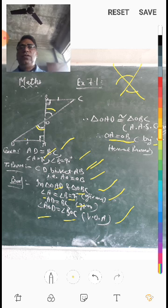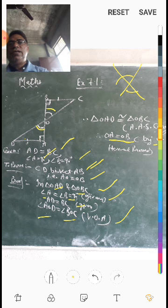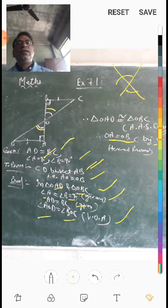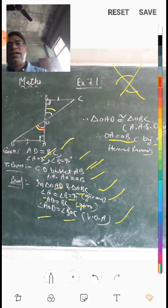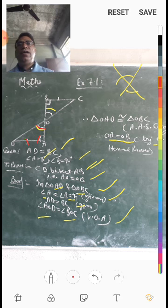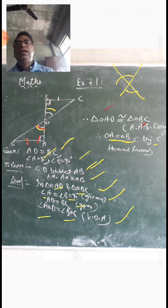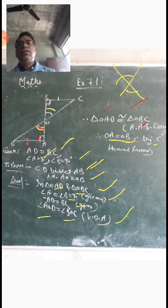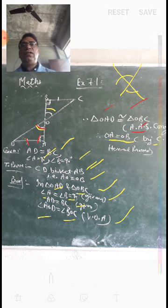So there are two angles and one side satisfying congruence. The two angles are the vertical opposite angles and the right angles, and one side is given equal. This gives us the AAS (Angle-Angle-Side) Congruence Rule. Therefore, triangle OAD is congruent to triangle OBC by AAS.